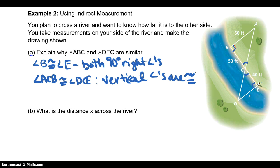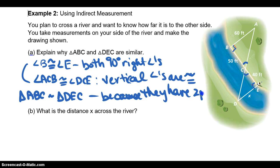Because they're vertical angles, we know that they're equal. Therefore, if you have two pairs of angles that are congruent, then we know that the triangles are similar. Triangle ABC is similar to triangle DEC because they have two pairs of congruent angles.